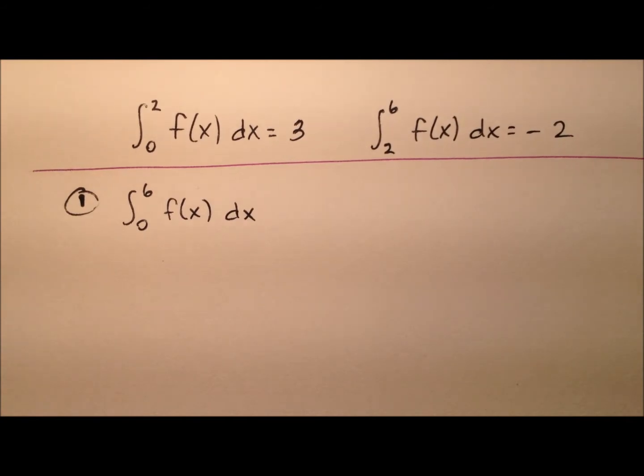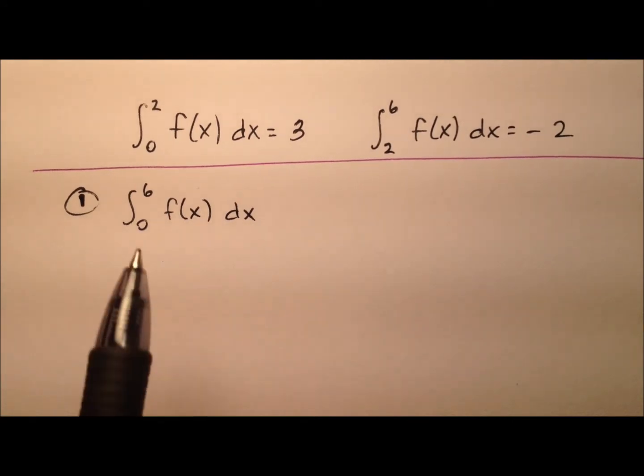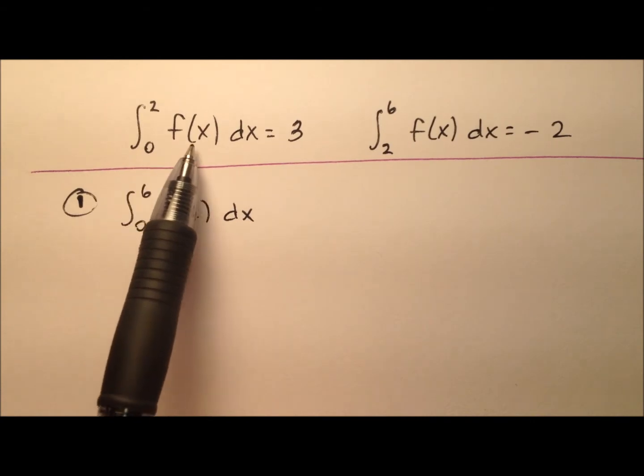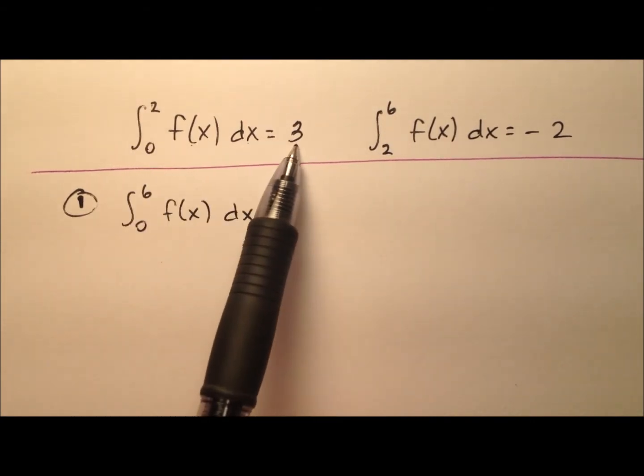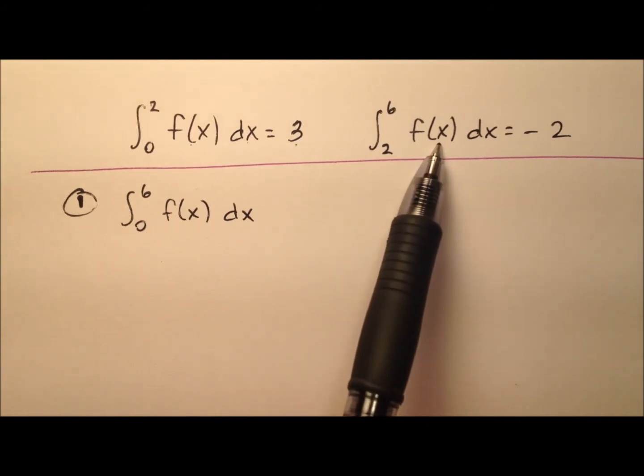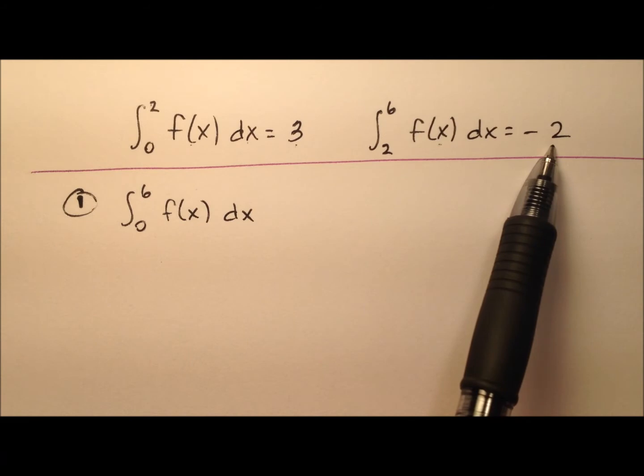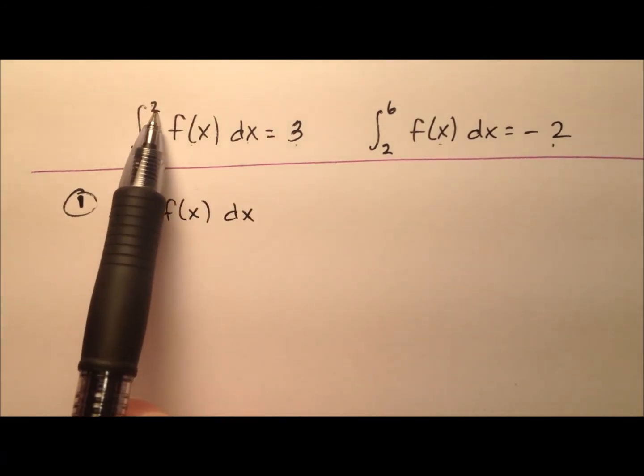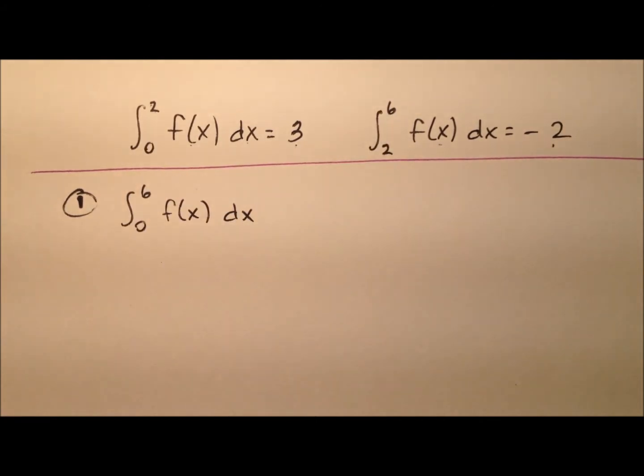In this video, we're going to use some general properties of definite integrals to evaluate other definite integrals. Here we have two pieces of information: the integral of f(x) from 0 to 2 with respect to x equals 3, and the same function integrated from 2 to 6 equals negative 2. Notice that the first integral goes from 0 to 2, and the second one picks up where this one left off at 2 and goes all the way to 6.